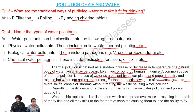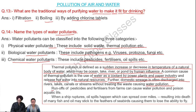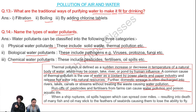Further, domestic sewage may also be discharged into rivers, lakes, and canals at many places without treating the waste, which is also causing water pollution. We also use pesticides and fertilizers to increase agricultural production. Whenever there is rain or water runoff, these pesticides and fertilizers flow into water bodies, causing water pollution and harm to aquatic life.